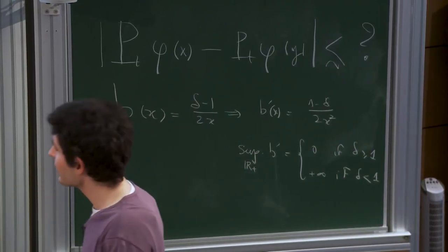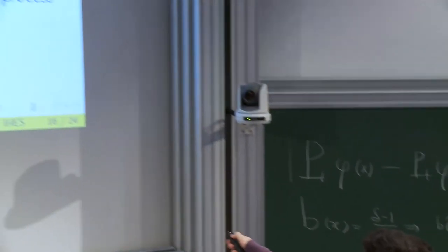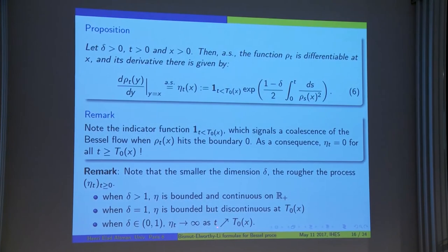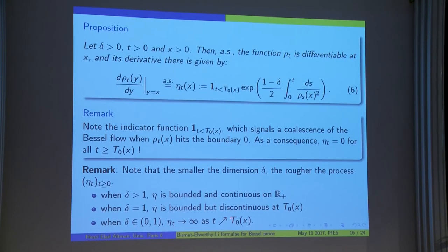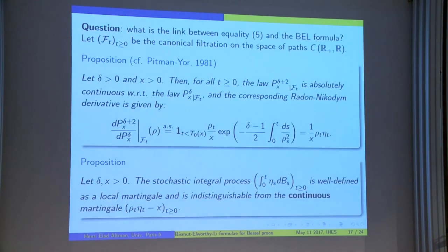We see that when δ becomes smaller than 1, we get into trouble. And, this can be seen when we look at the derivative of ρ, because when δ is smaller than 1, η_t will go to infinity as t goes to t_0, where t_0 is the first hitting time of the origin.